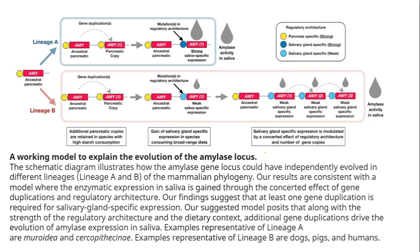Some animals that are less likely to eat starchy diets don't have extra copies — except horses, which eat a ton of starch but don't have extra copies of their amylase gene, so it's not a perfect correlation. But overall, more starch in your diet means more reason to have greater amounts of amylase genes, and any duplication ends up being a benefit. Let's back up and ask: how does this happen? Here are two possible routes to becoming better able to digest starch.